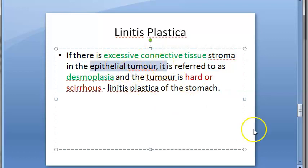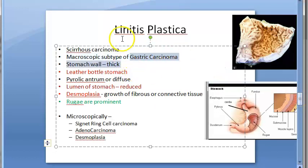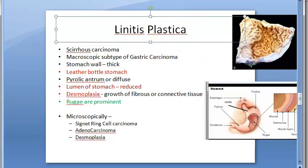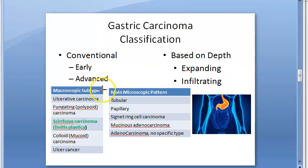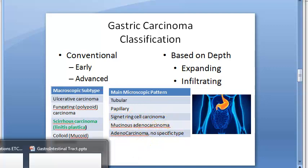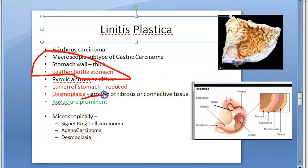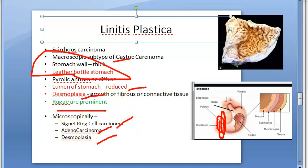So basically, linitis plastica is seen in the macroscopic subtypes of gastric carcinoma classification. Microscopically you will see signet ring cell carcinoma or adenocarcinoma. Remember: leather bottle stomach, desmoplasia, lumen of stomach is reduced, rugae are prominent, signet ring cell carcinoma or adenocarcinoma, pyloric antrum can be affected more, stomach wall is thick, and it is called scirrhous carcinoma.